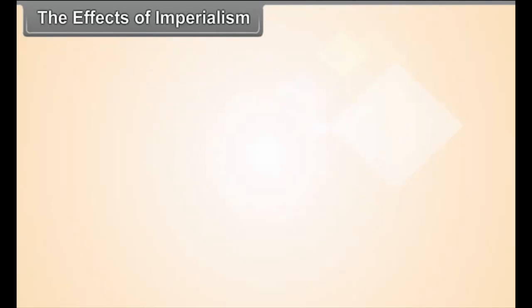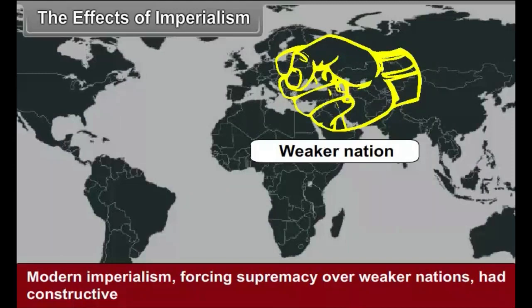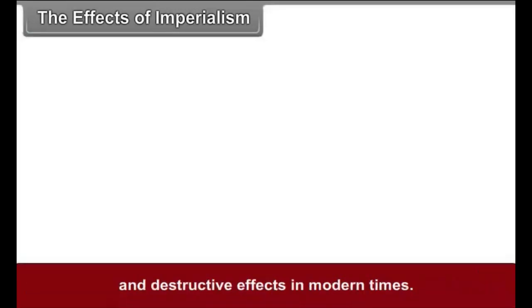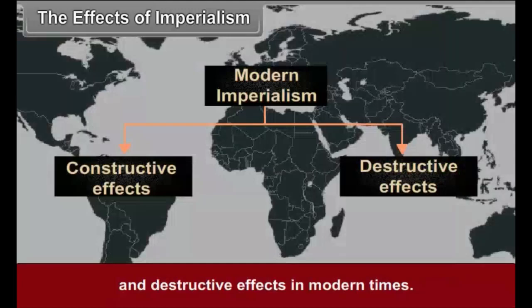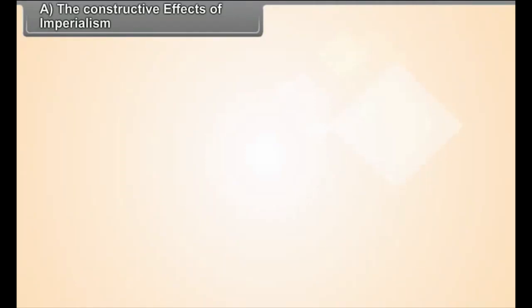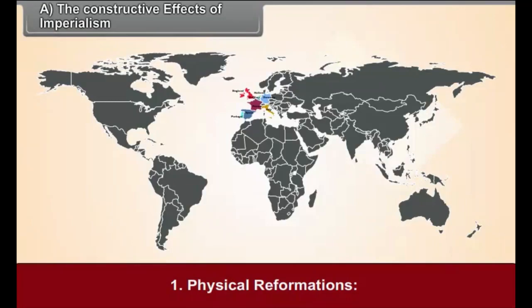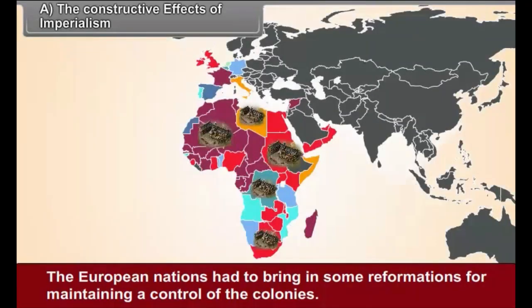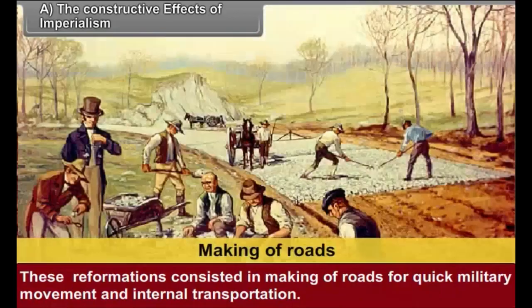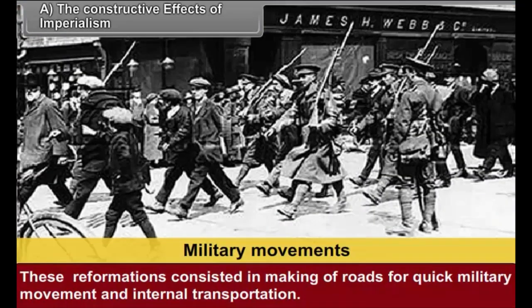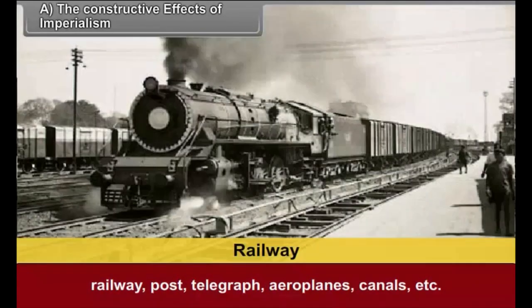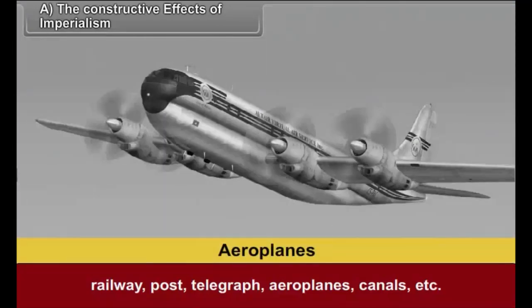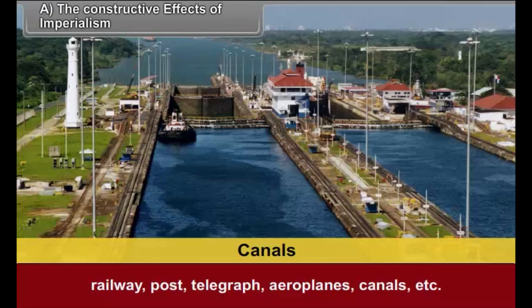Modern imperialism, forcing supremacy over weaker nations, had both constructive and destructive effects. Among the constructive effects, the first was physical reformations. European nations brought in reformations for maintaining control of the colonies. These consisted of building roads for quick military movement and internal transportation, railways, post, telegraph, aeroplanes, canals, etc. As the colonizers stood to gain these facilities, it also helped local people by creating interaction among them.